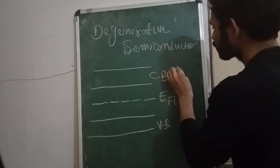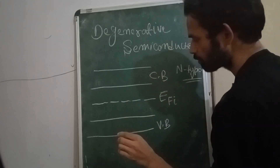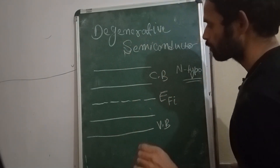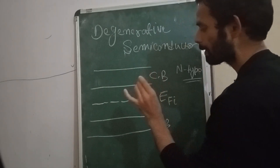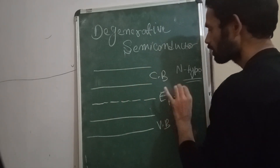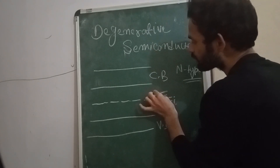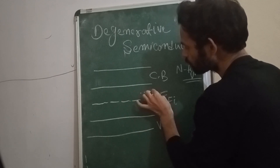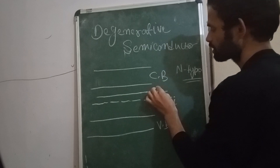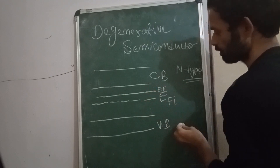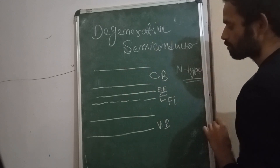In case of n-type, the donor ion concentration means we are adding pentavalent impurity. If we add pentavalent impurity, then this intrinsic Fermi energy level will get shifted — it will shift above the intrinsic Fermi energy level.